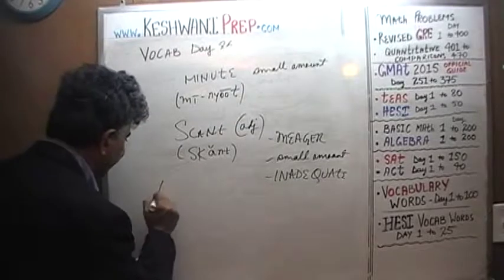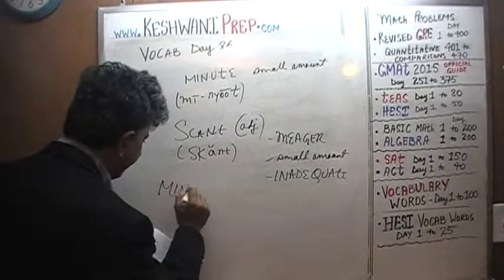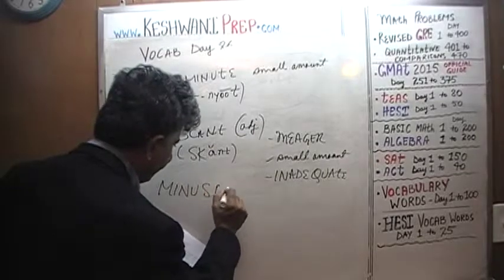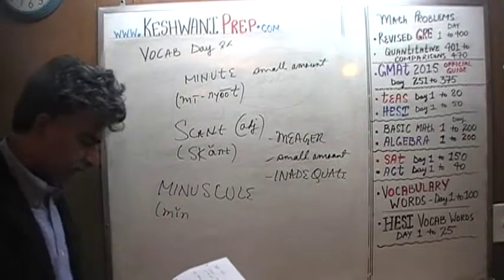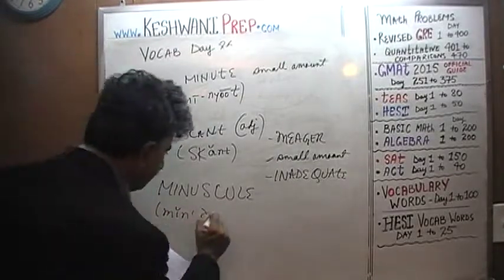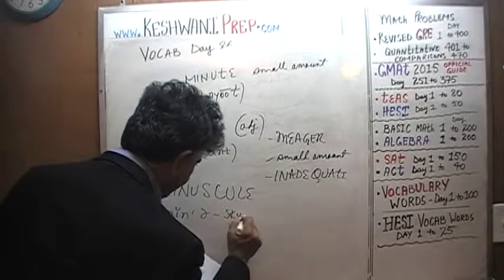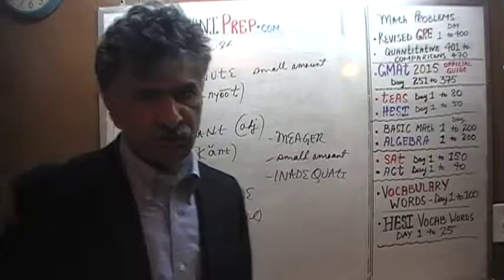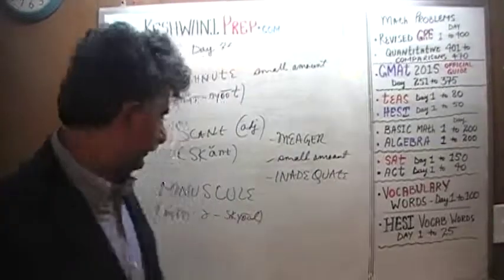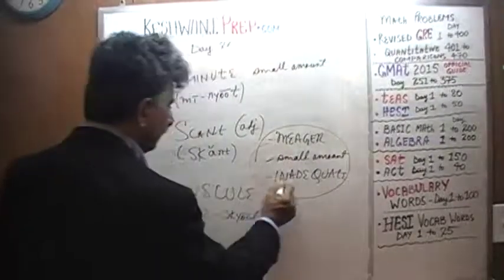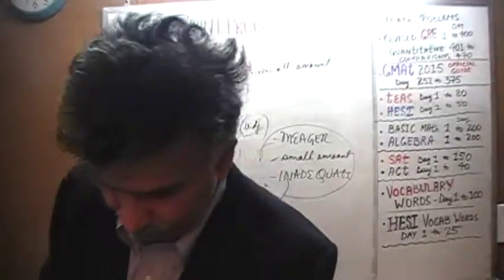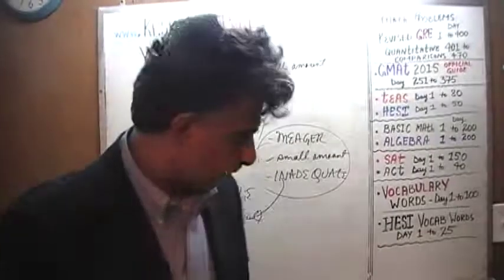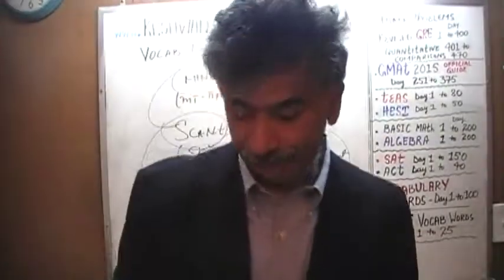Last, what we are going to learn is minuscule. Minuscule means tiny, small, meager, scant, not enough. All of these words — scant, minute, tiny amount, small amount — they are not enough, not adequate. That's it for today. Bye now.